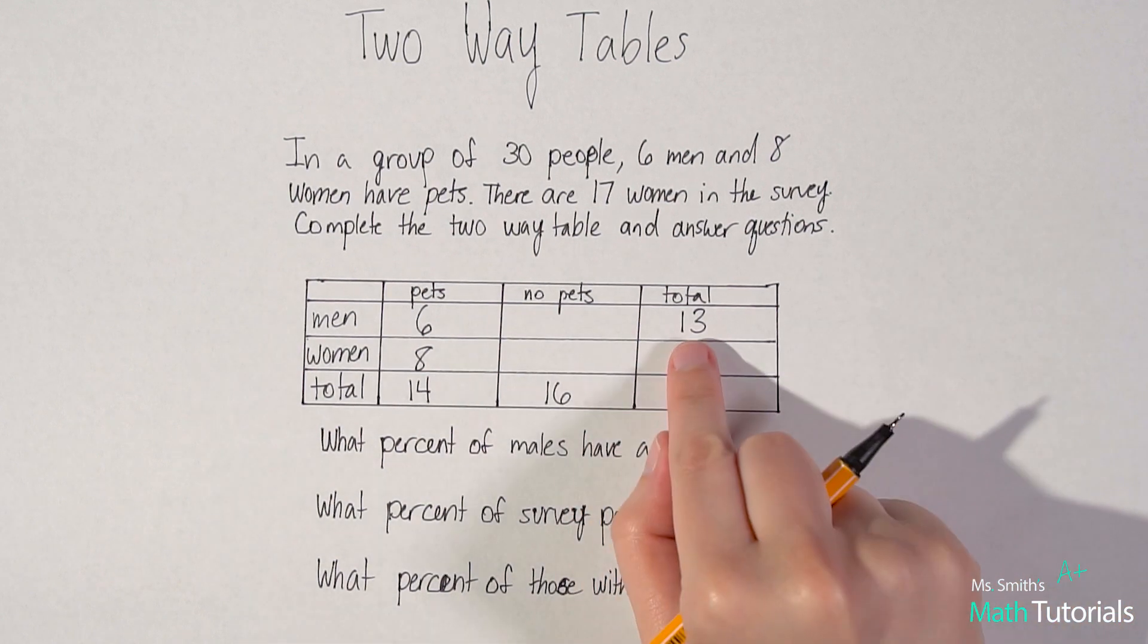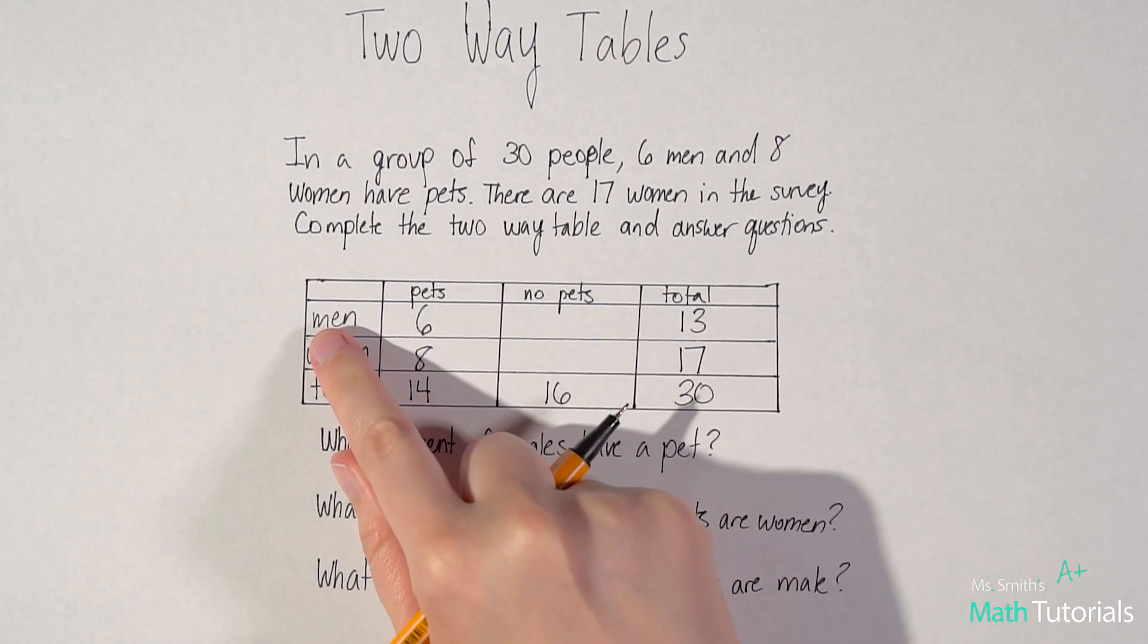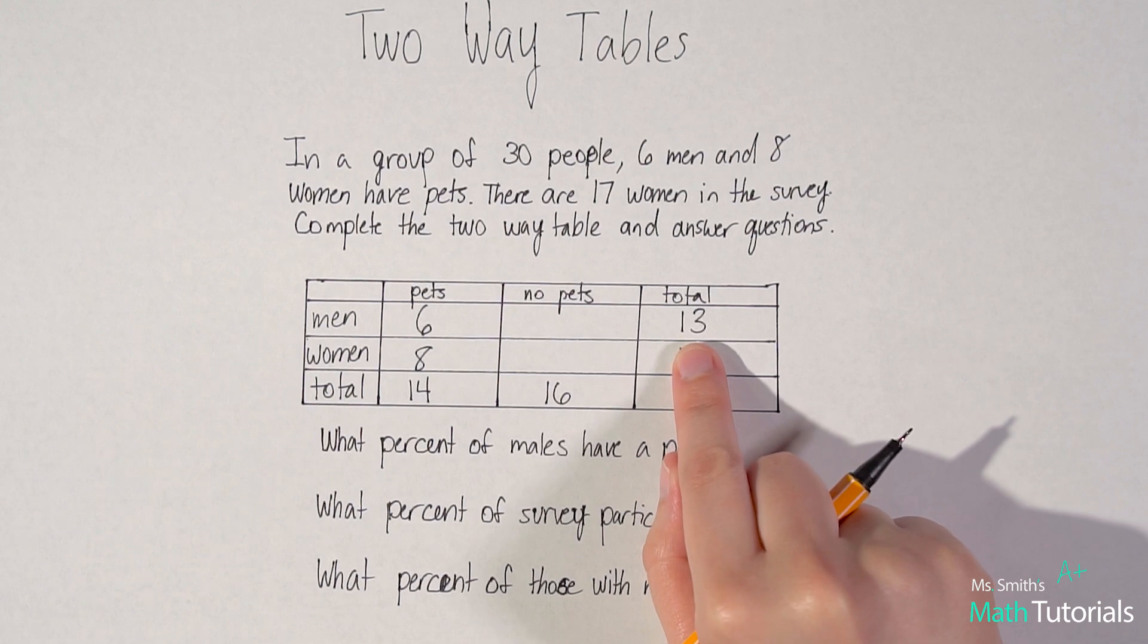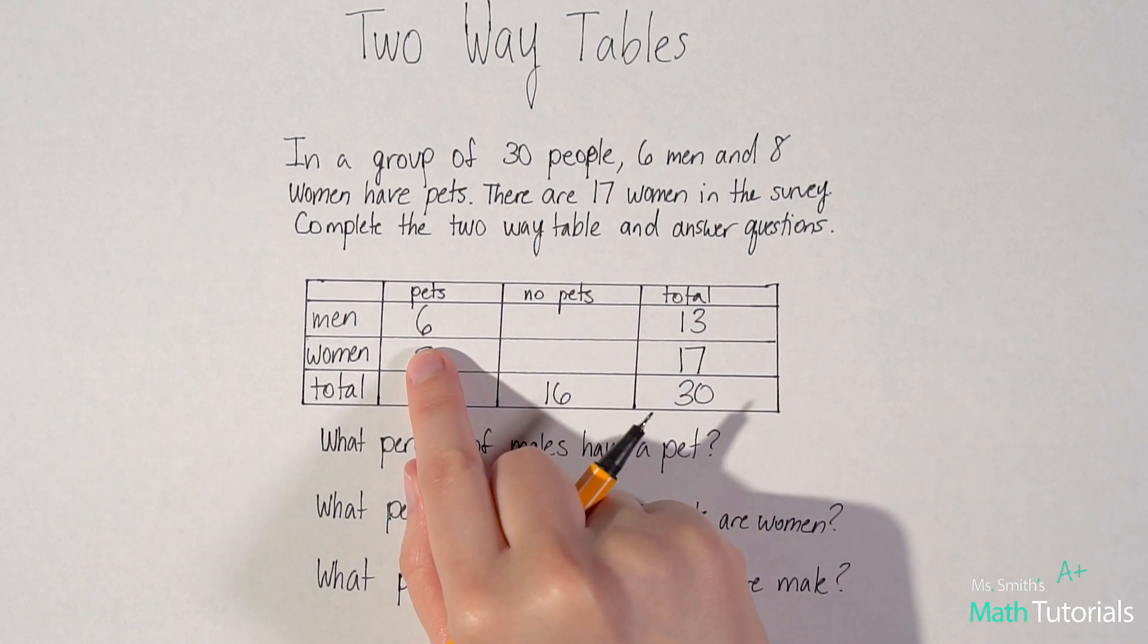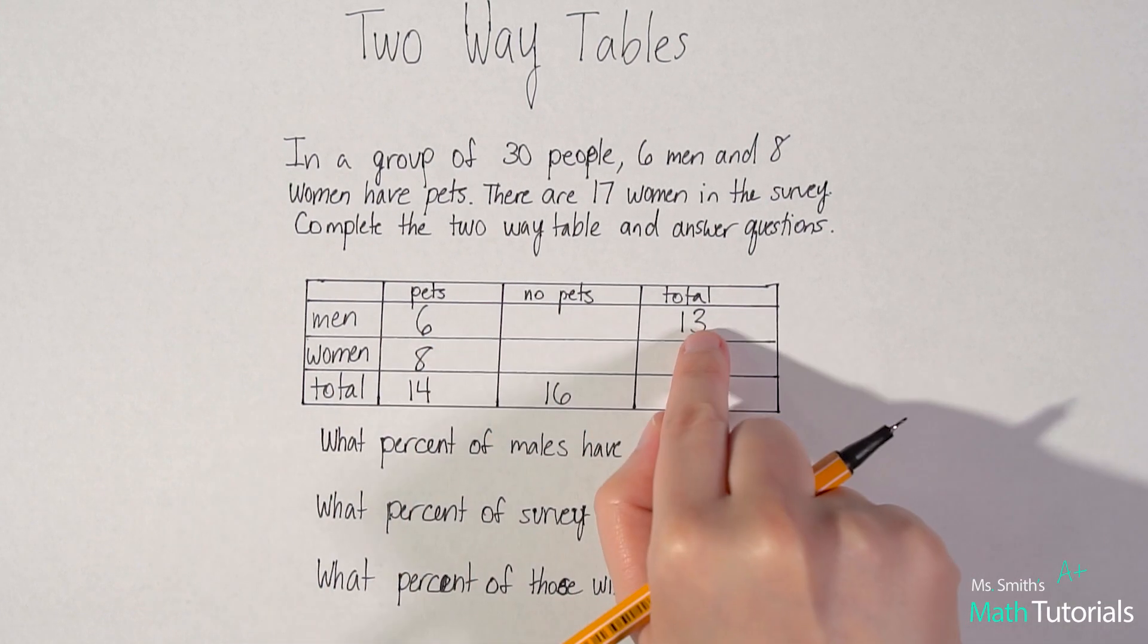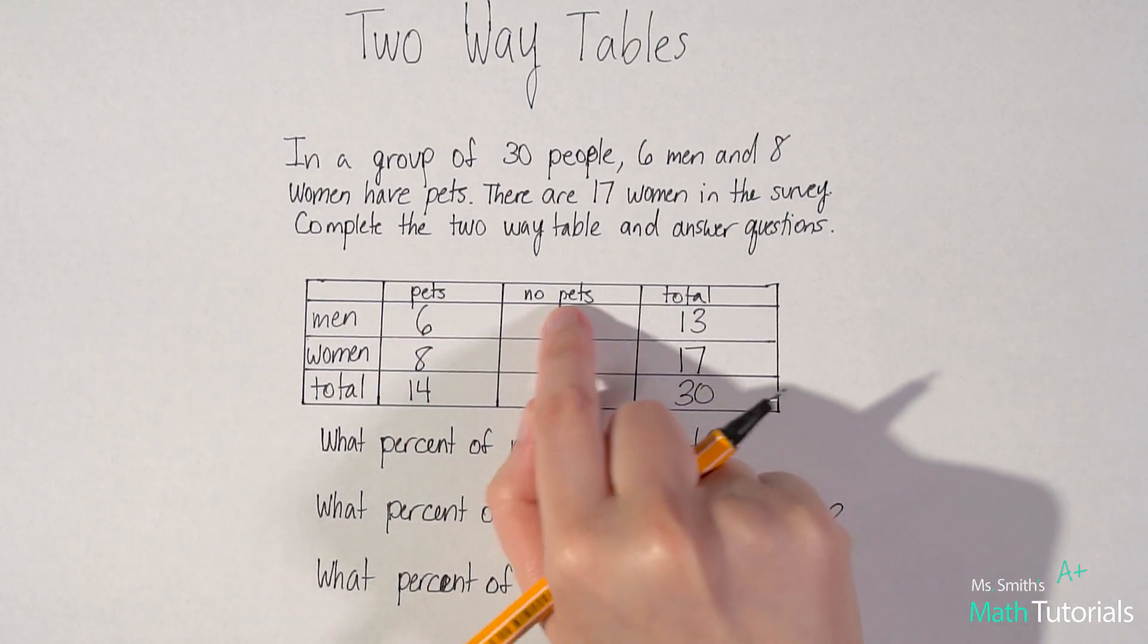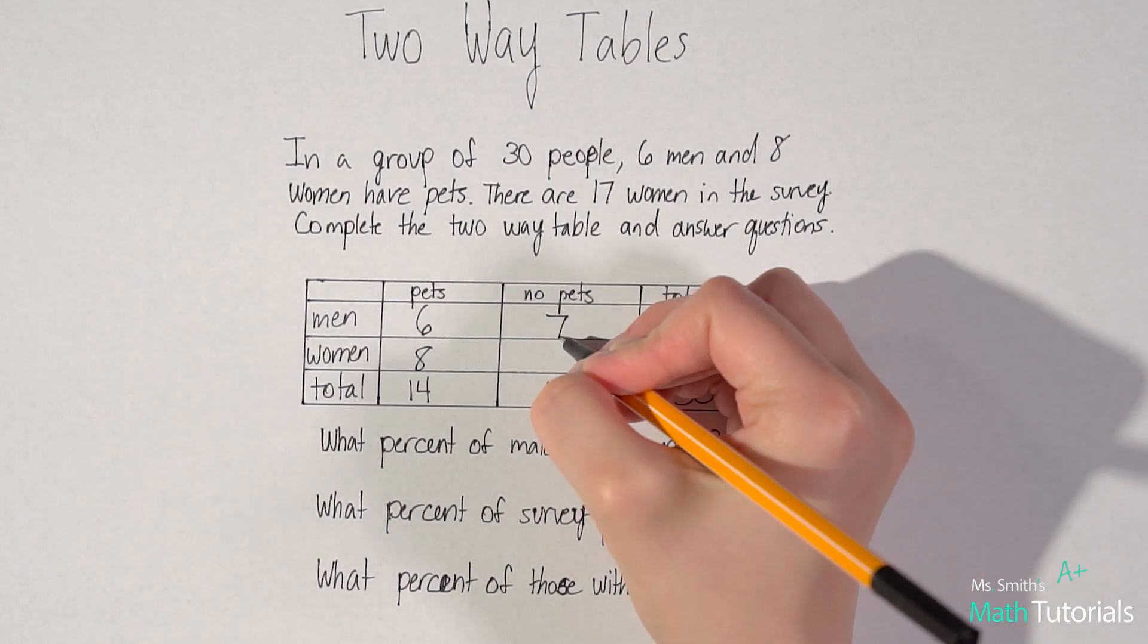All right. And then if I know the total of men, there's 13 men total in the survey, I know six of them have pets. Couldn't I do 13 minus six to find out the amount that don't have pets? Sure. And that will be seven.